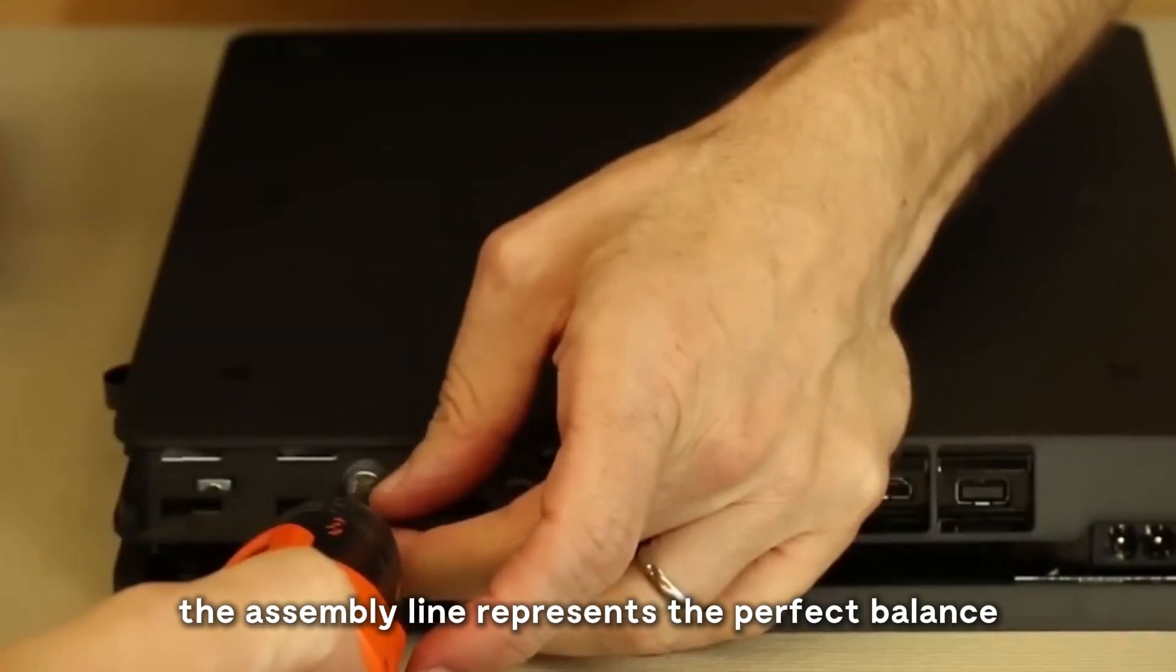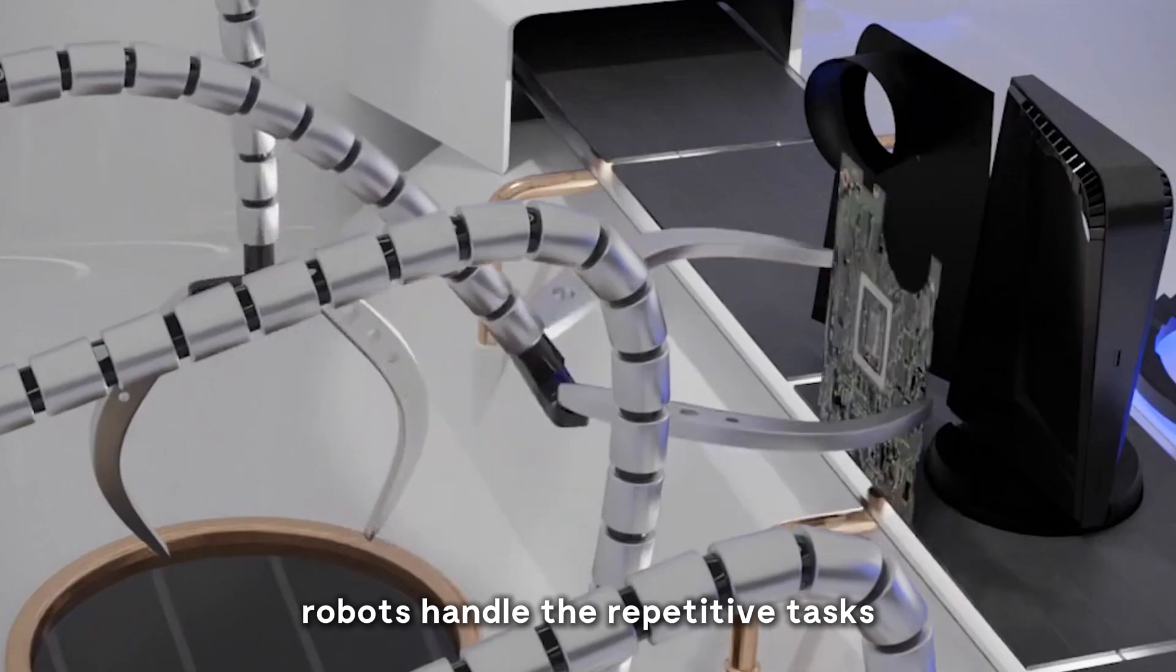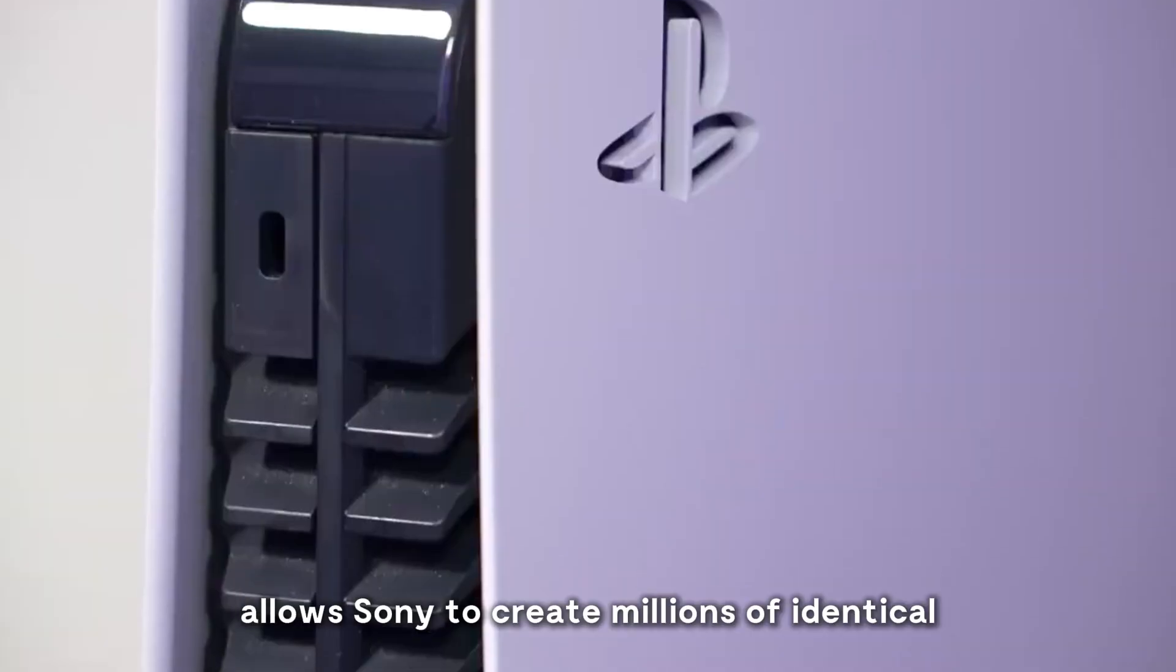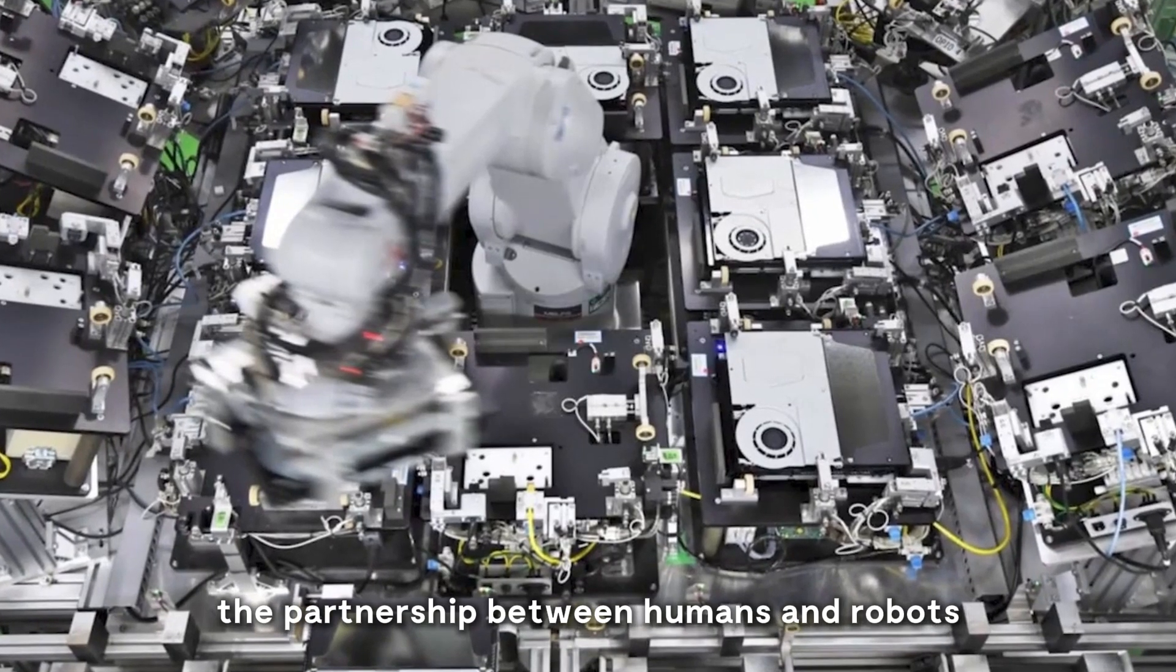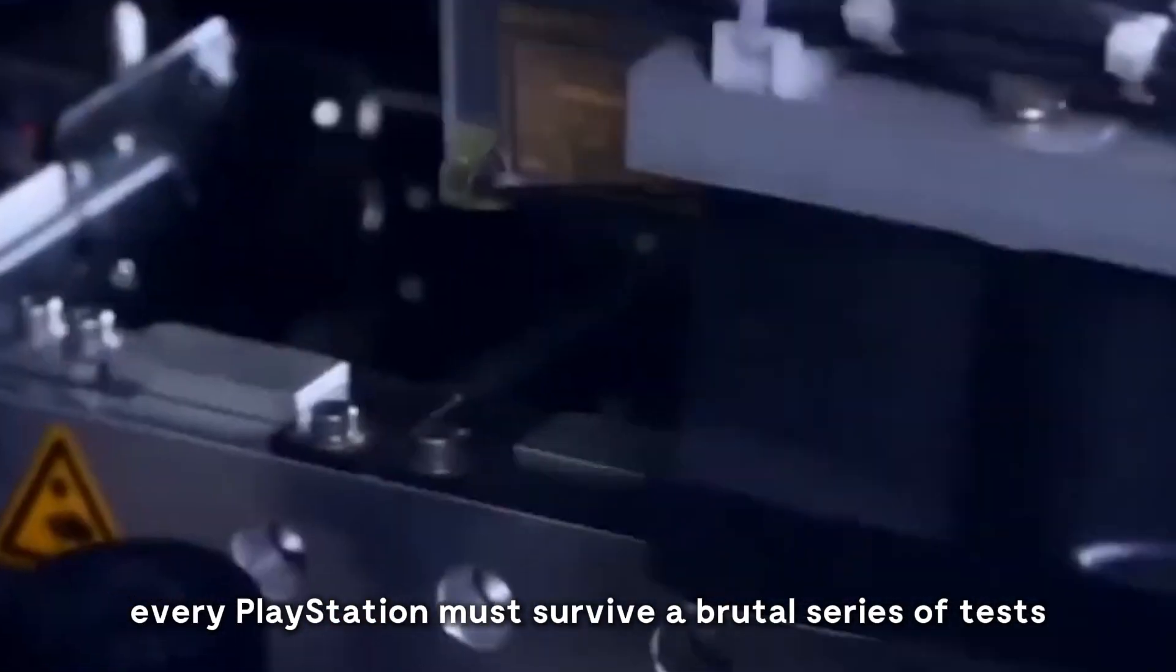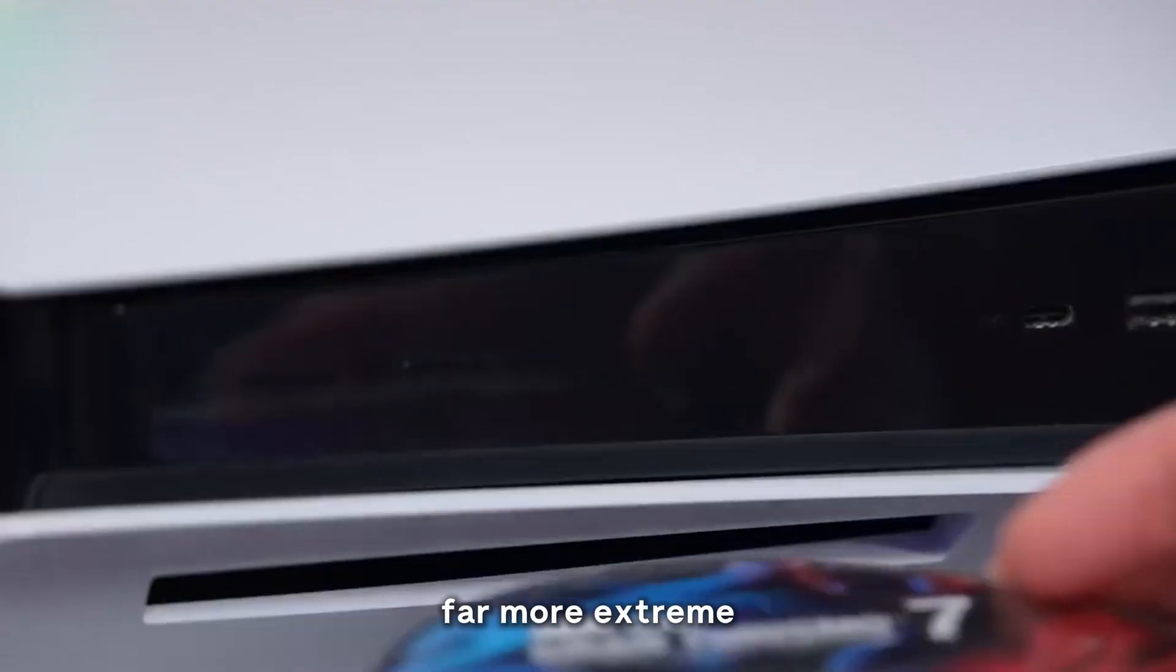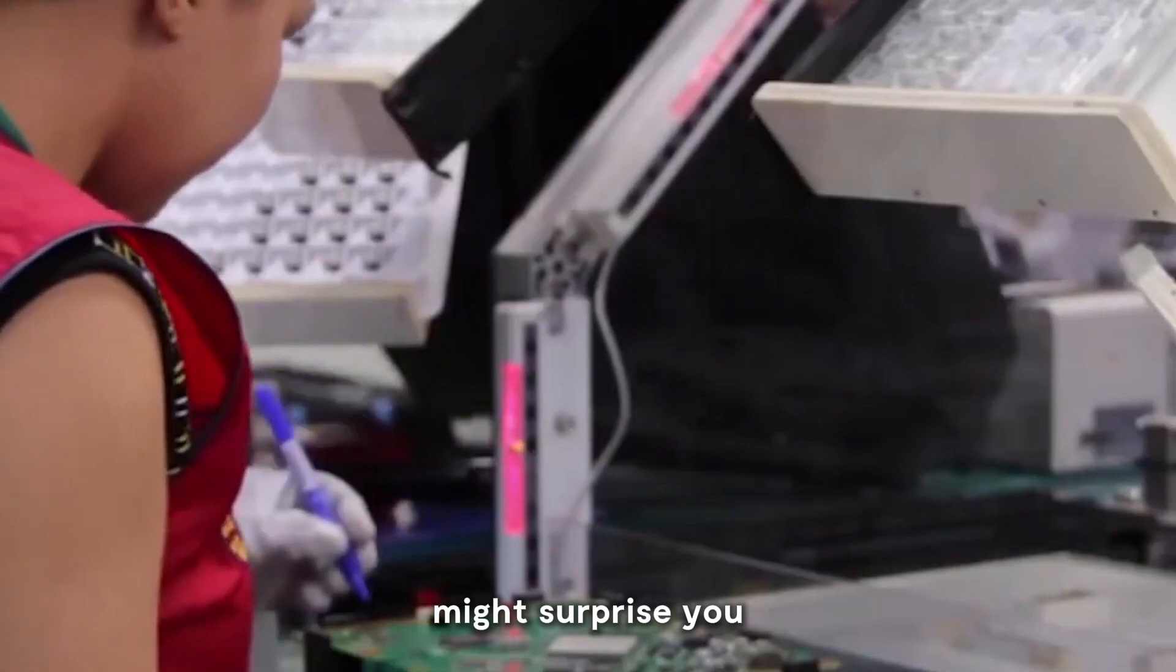The assembly line represents the perfect balance between cutting-edge automation and irreplaceable human skill. Robots handle the repetitive tasks requiring superhuman precision, while technicians provide the judgment and fine motor skills that automation can't replicate. This partnership allows Sony to create millions of identical, high-performing consoles that satisfy gamers worldwide. The partnership between humans and robots doesn't end at assembly, it's just the beginning of a console's journey. Every PlayStation must survive a brutal series of tests designed to break it, with specialized machines pressing each button thousands of times and subjecting the system to conditions far more extreme than your living room could ever create.